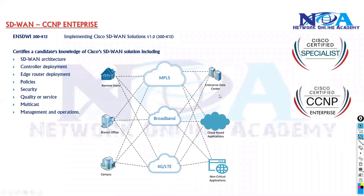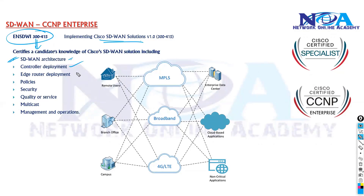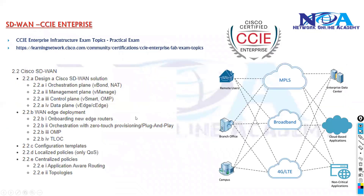In terms of CCNP and CCIE Enterprise preparation, with CCNP there is a concentration exam paper on SD-WAN, 300-415, which is focused on SD-WAN solutions offered by Cisco. This exam tests the candidate's ability to understand the SD-WAN architecture and deployments of the controllers as well as the edge devices called edge routers, and then configure policies, security policies, quality of service, multicasting, and management operations.